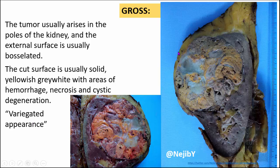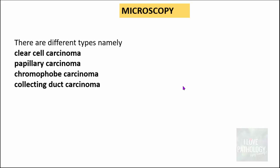This tumor is bosselated — when it grows beyond the confines of the renal parenchyma, the external surface appears bosselated. These tumors often arise in the poles of the kidney, with the upper pole most commonly affected. Microscopically, there are different types including clear cell carcinoma, papillary carcinoma, chromophobe carcinoma, and collecting duct carcinoma. What we will focus on is the clear cell type.